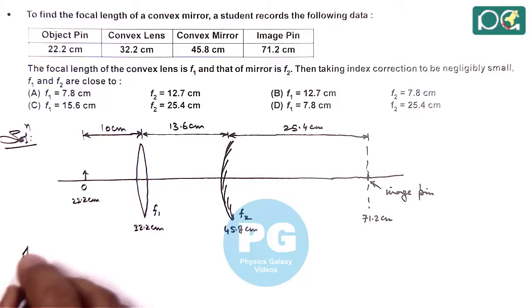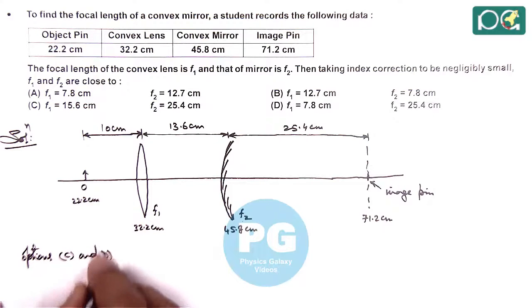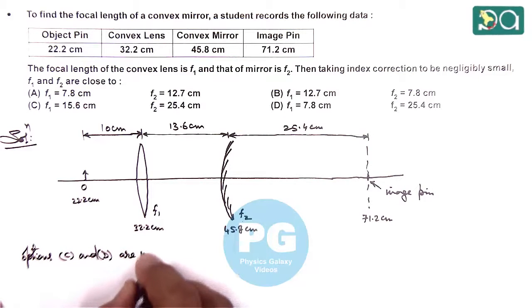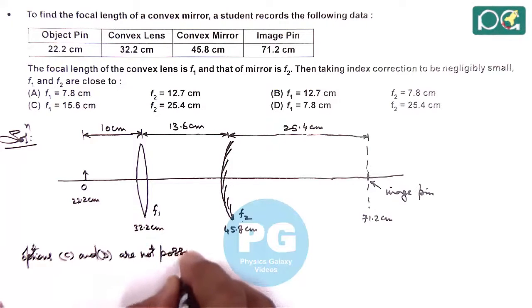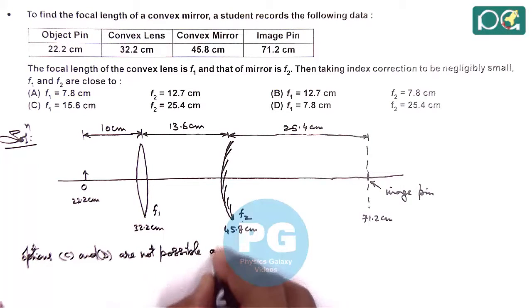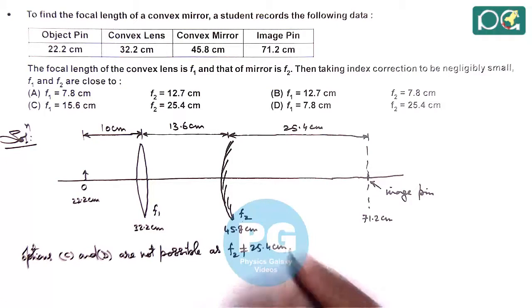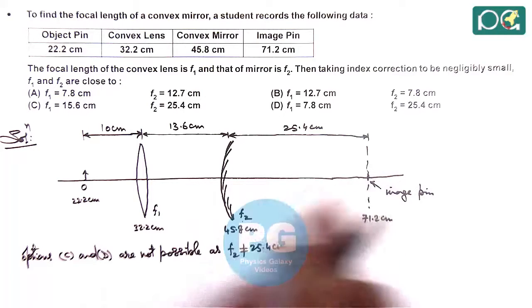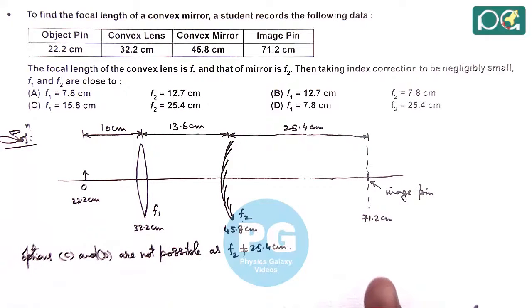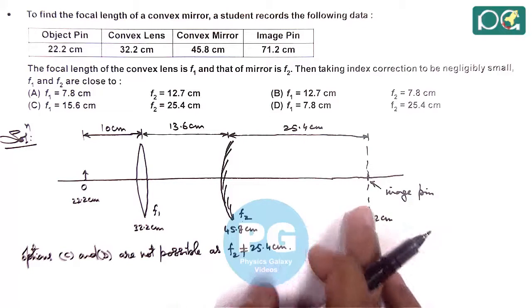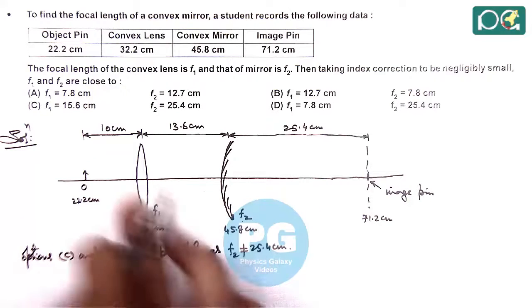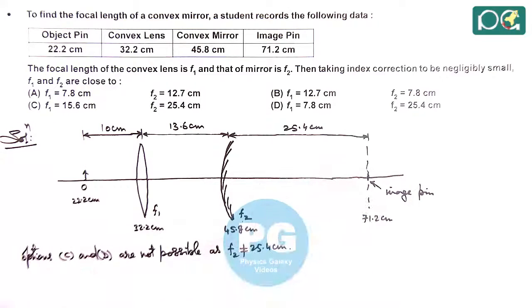We can directly write options C and D are not possible, as f2 can never be equal to 25.4 centimeter. Because final image is obtained at 25.4 only if the object is at infinity, which is not the case in this situation. That can happen only if the focal length f1 is 10 centimeter, which is not the case. So we can directly discard options C and D.